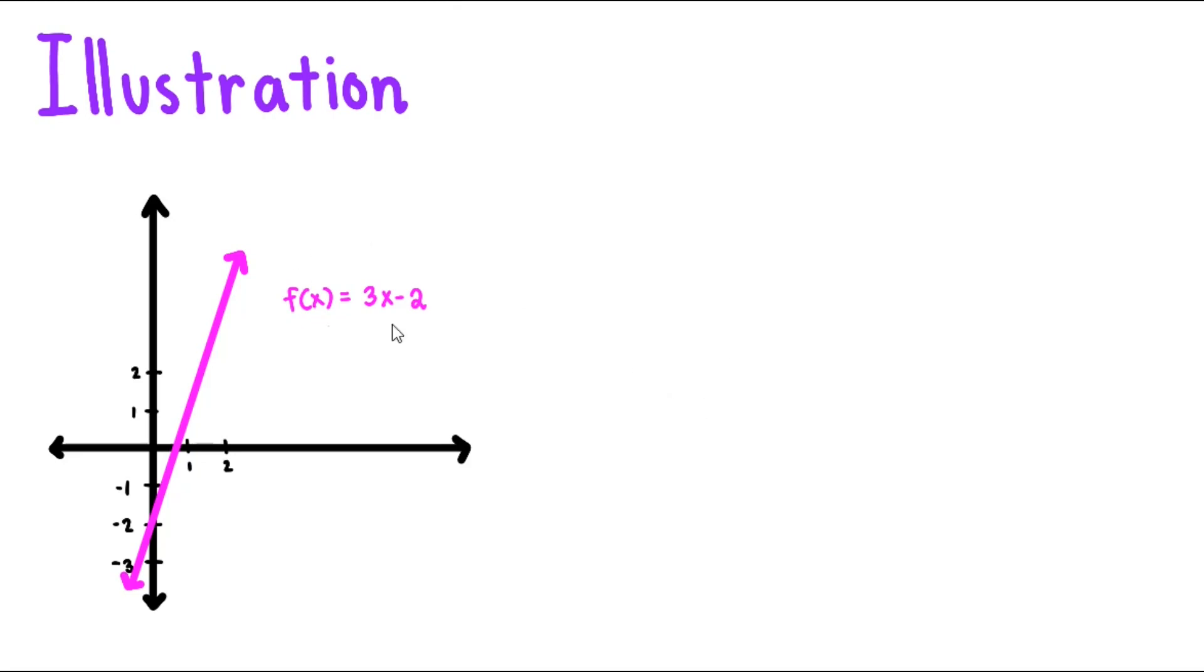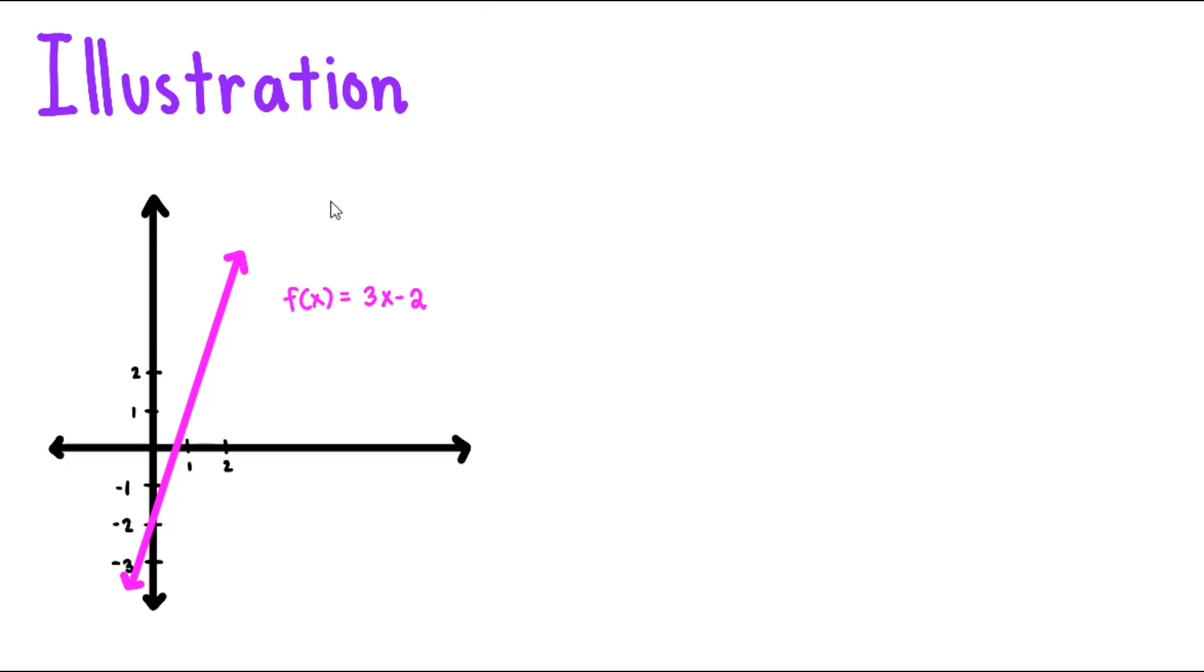Let f of x be equal to 3x minus 2 with graph shown. We then consider the values from the left of 1 and let's try to complete this f of x table.